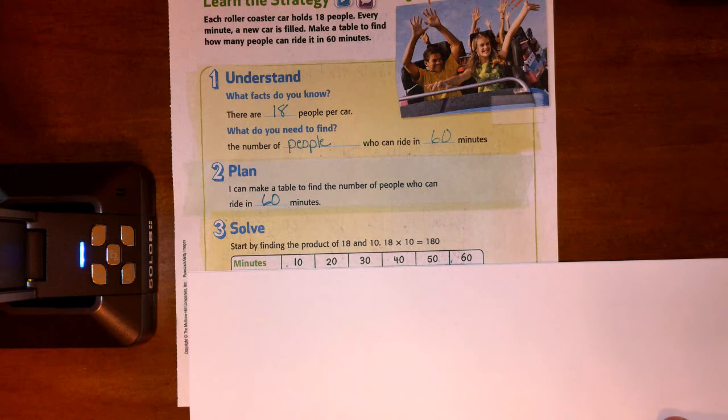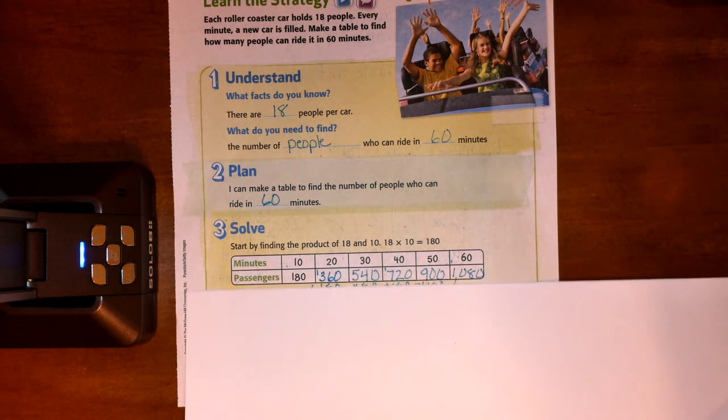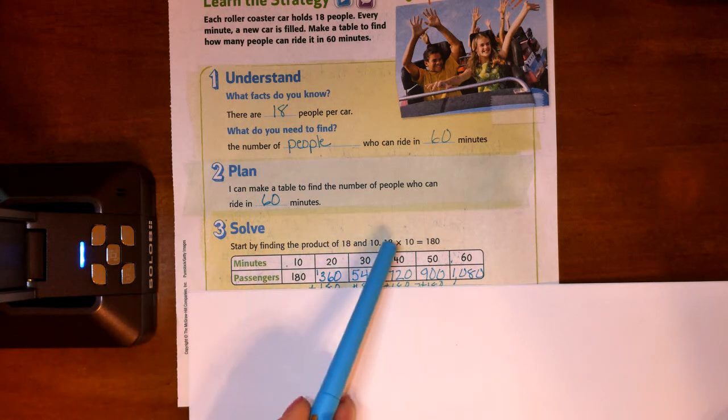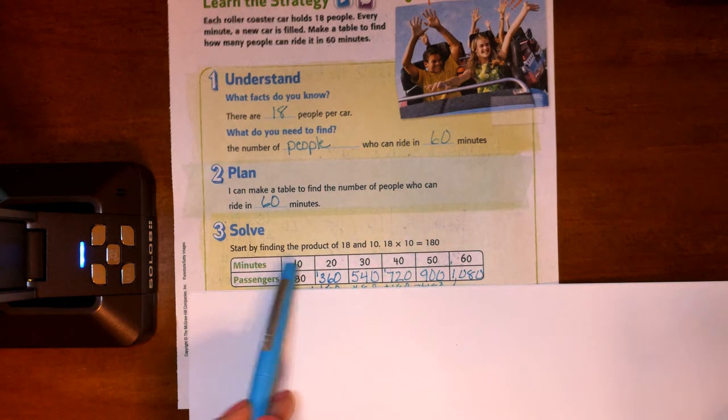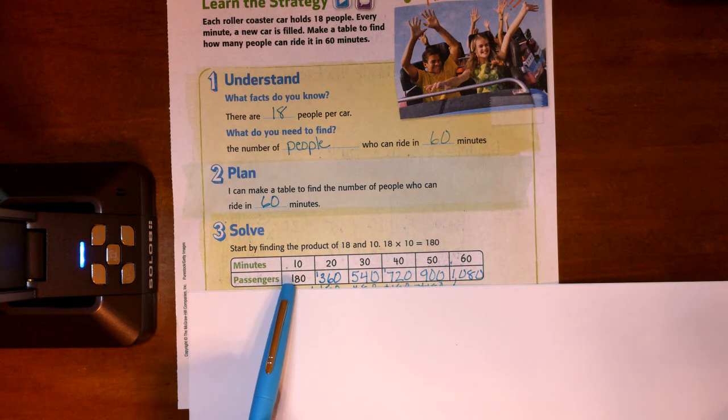So we're working in groups of 10, because zeros are totally our friends. So we know that 18 times 10 is 180. So for 10 minutes, 180 people can ride.